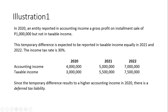Since accounting income is higher than taxable income in 2020, there is a taxable temporary difference resulting in a deferred tax liability. For 2021 and 2022, even though taxable income is higher than accounting income, this does not create a new deferred tax asset — it is simply the reversal of the deferred tax liability from 2020. We just reverse the deferred tax liability account when 2021 and 2022 arrive.